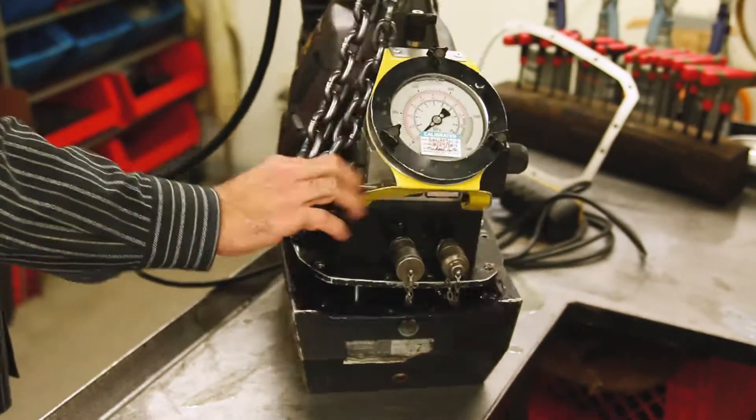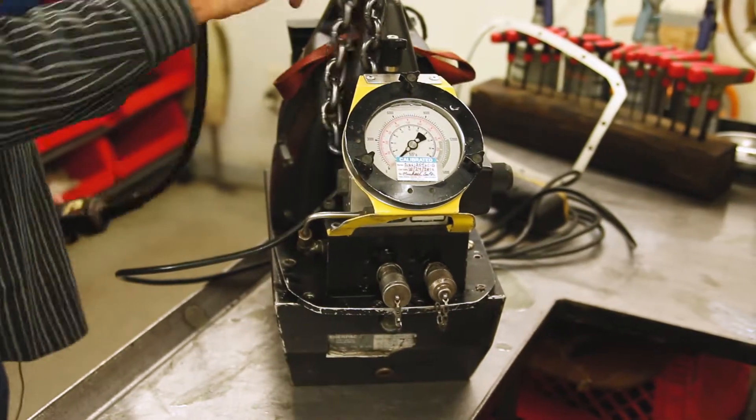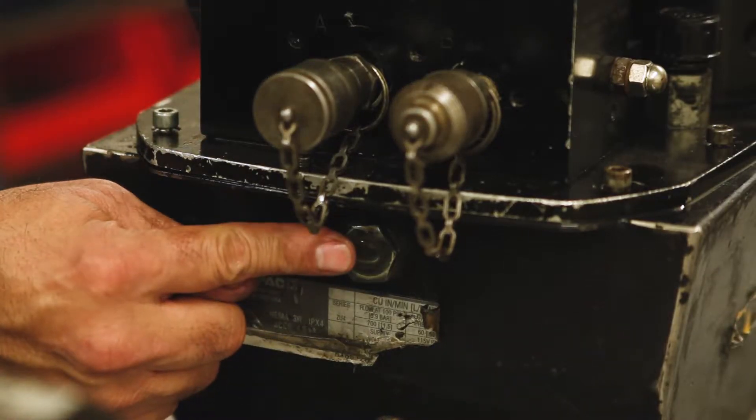Fill the reservoir with clean hydraulic fluid. The reservoir is full when the oil level is a little over halfway up the sight glass.